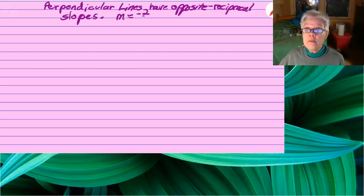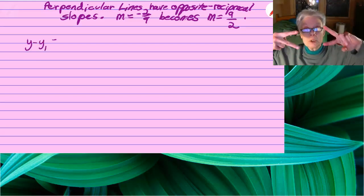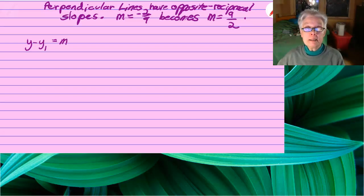So the slope of the given line, we already know, is negative 2 over 9. Now that's going to become the opposite reciprocal, which is positive 9 over 2. The slopes are reciprocals and they're opposite signs.